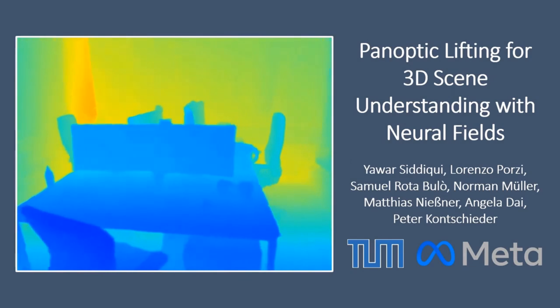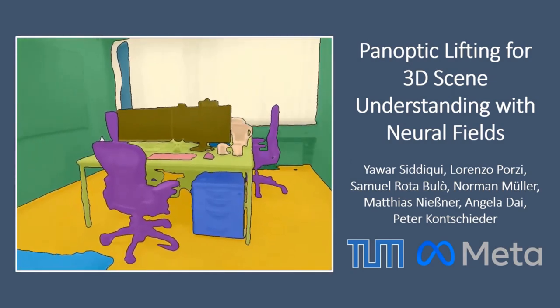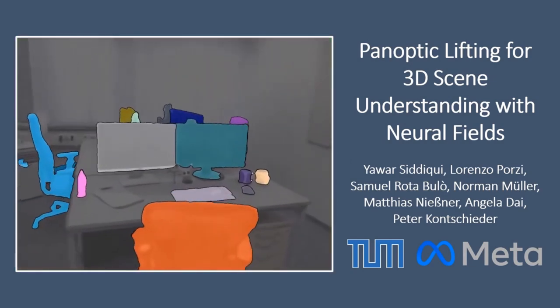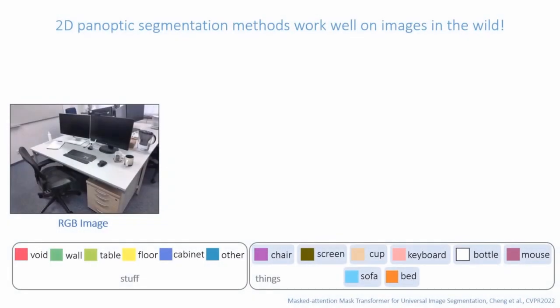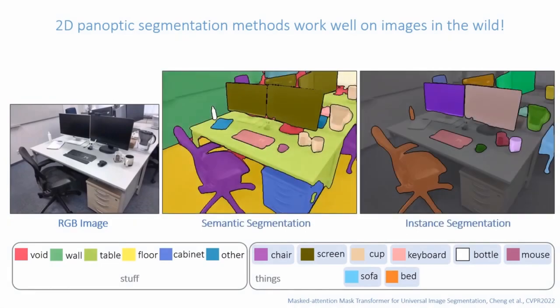We present Panoptic Lifting for 3D scene understanding with neural fields. With the availability of large-scale labeled 2D data and advances in model architectures, state-of-the-art 2D panoptic segmentation methods perform well, even for images in the wild.